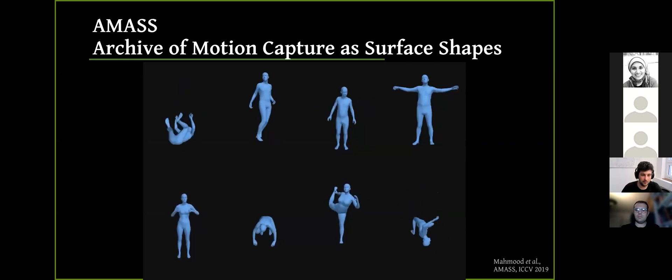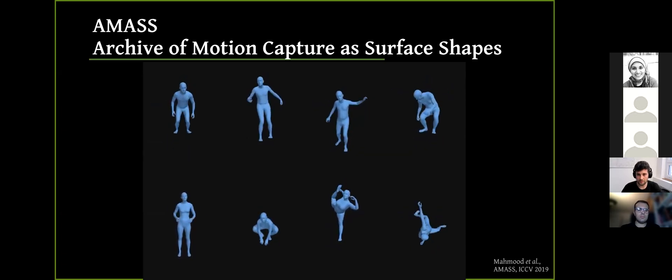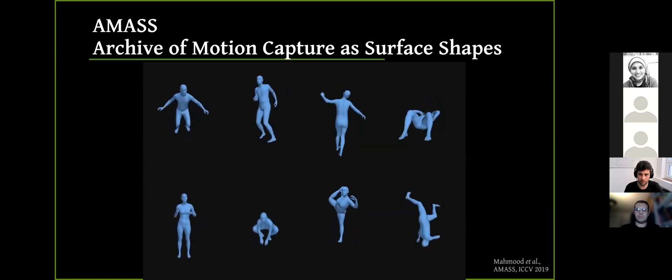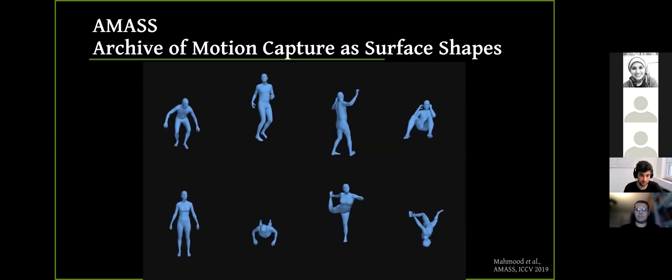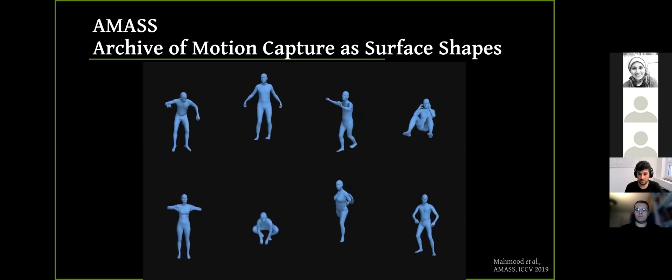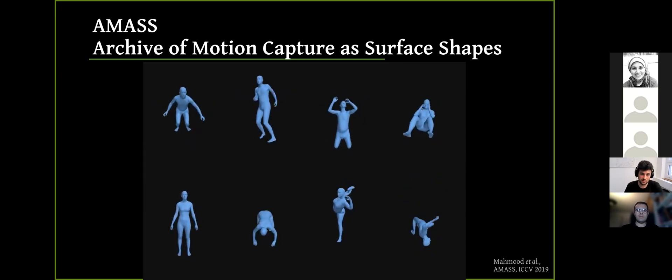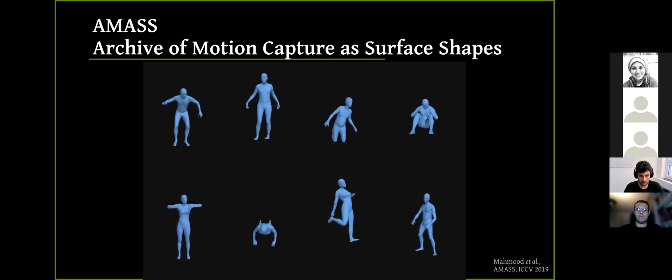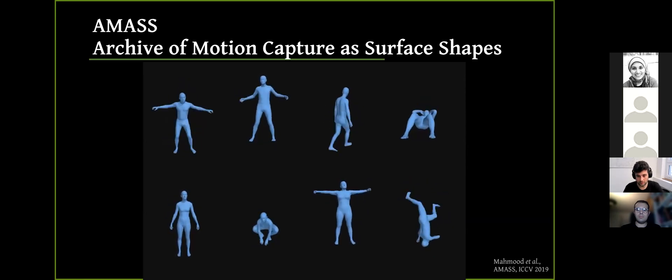For that, fortunately, we have AMASS. We leverage the AMASS dataset, which is sufficiently rich to learn a model of how people move. It's a large-scale dataset. And our approach learns to estimate sequences such that the discriminator cannot tell the difference between the estimated motion and the AMASS motions.